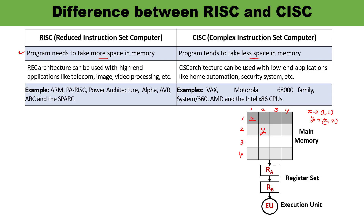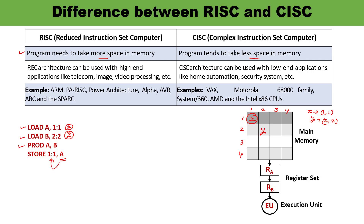To understand more memory space versus less memory space — if there is a requirement to multiply, here is what happens in the case of RISC. First, you load content x from location (1,1) into register A. Then you load content y into register B. Then you perform the multiplication. After multiplication, you copy the result from register A back into the memory location.